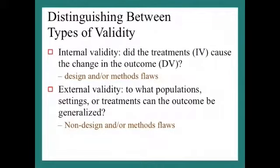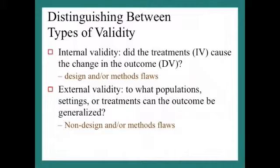This leads into validity issues in experimental design. There are two sources of invalidity. The first is internal validity — did the treatments or the independent variable really cause the change in the outcomes, which is the dependent variable? Any problems with internal validity have to do with design and/or method flaws.